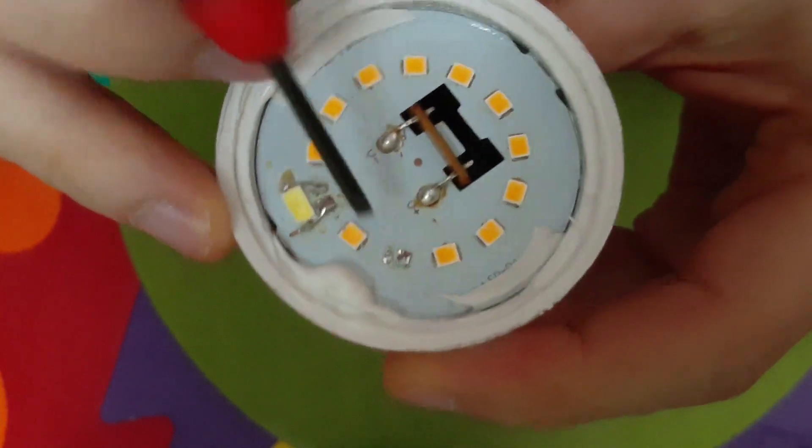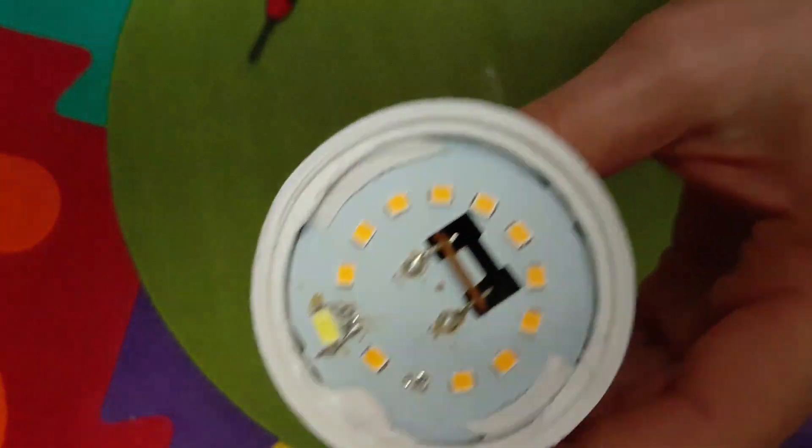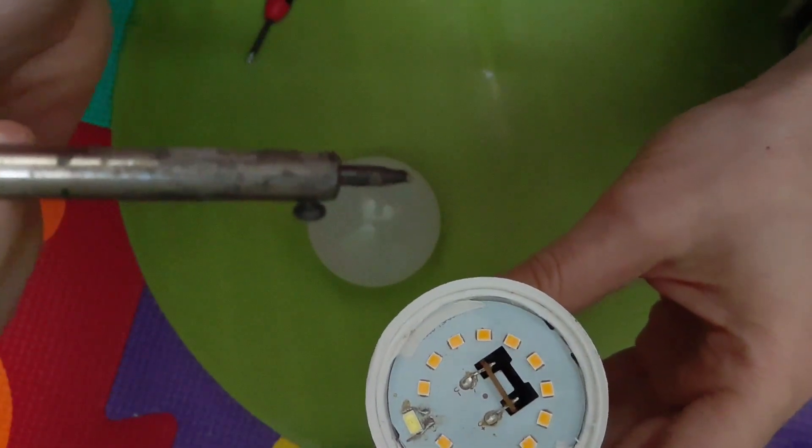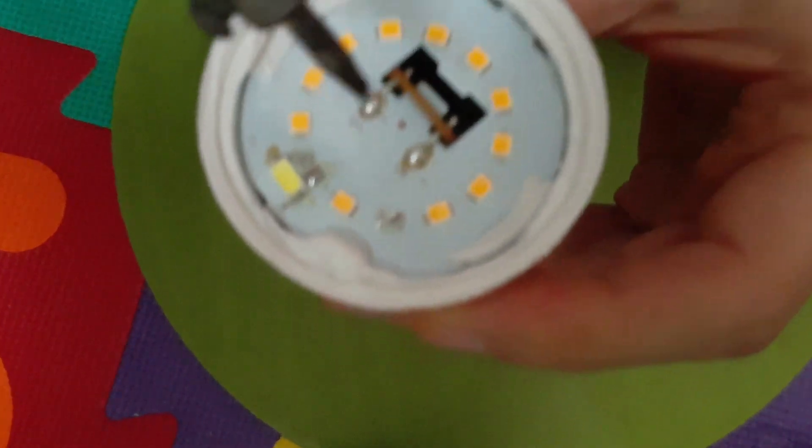Then you take your trusty soldering iron and there will be some leftovers. You just heat it till they go clean. There, so you just heat it. Now it's clean.